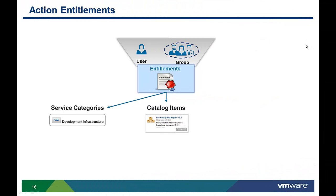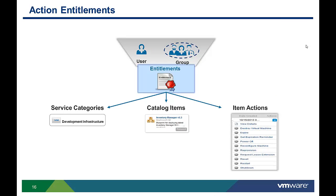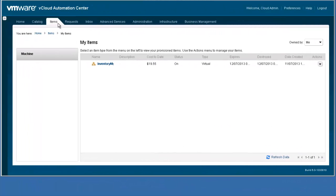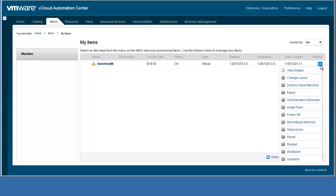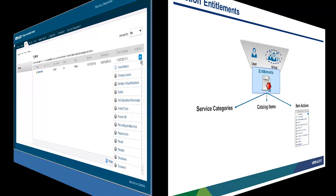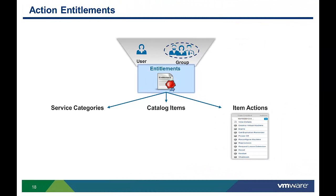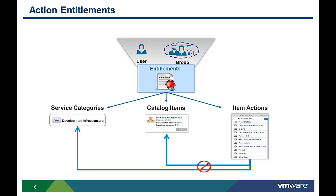We have shown how to set up entitlements for service categories and catalog items. Next, let's look at configuring action entitlements, which determine which users or groups of users can perform specific actions against provisioned items like applications, infrastructure, or other IT services. Unless actions are specifically entitled, the user will not be allowed to perform ongoing day 2 operations. The items tab contains the applications and resources or items that are owned by each user. Actions are the commands that can be executed against those items. Action entitlements control what actions each user is allowed to perform against their items. Although action entitlements are managed on the same page as service category and catalog item entitlements, there is not a one-to-one relationship between action entitlements and other types of entitlements.